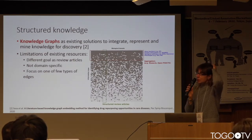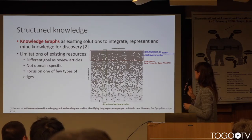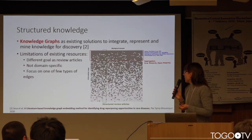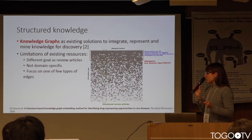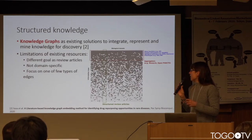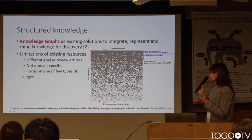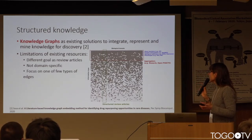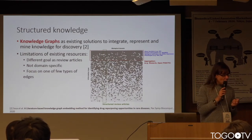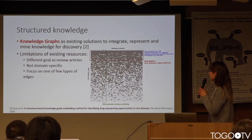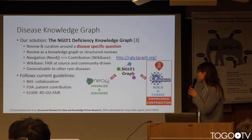An existing solution is the use of knowledge graphs, which are very useful to integrate, represent, and mine knowledge for discovery. However, when using them to review knowledge around a rare disease, existing informatics resources have several limitations. Most importantly, they are built for different goals, they are not domain-specific, and they focus on only a few types of edges in the graph.